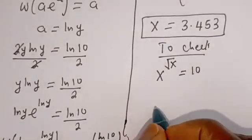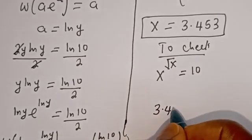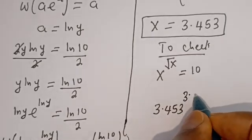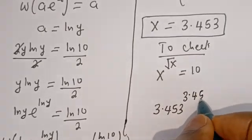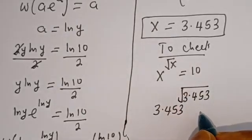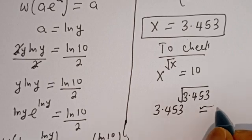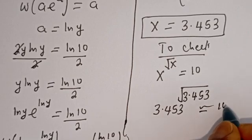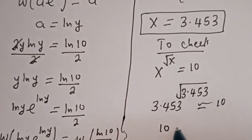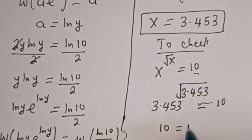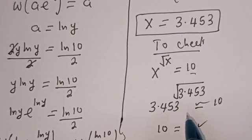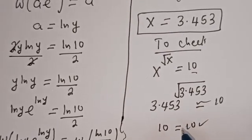Here is the check: 3.453 to the power of square root of 3.453 is approximately equal to 10. Therefore the left hand side, 10, is equal to the right hand side, 10, which is true. I hope you enjoyed the video. Thank you for watching, please don't forget to like, share, comment and subscribe. Bye bye.